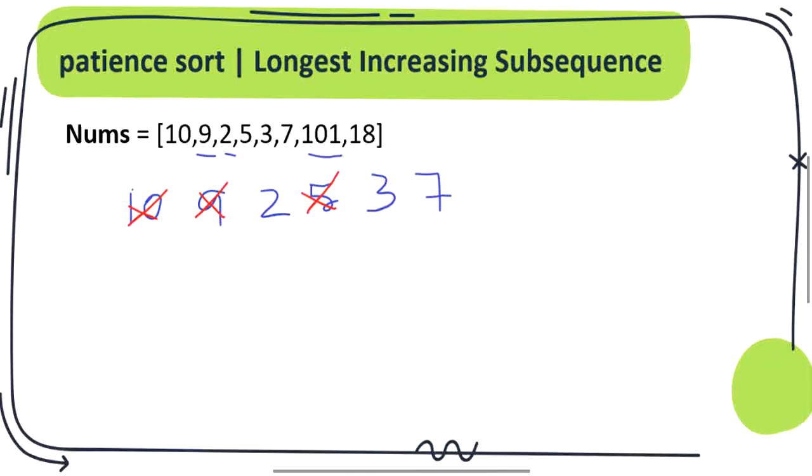Moving on to 101. Ceiling of 101 is going to return null, so simply add that to our set. Finally the number is 18. 18 ceiling is going to return 101 because that is the nearest greater number in the set. We are going to remove 101 and add 18 to the set. So finally the elements left in the TreeSet is going to be the longest increasing subsequence and size of the TreeSet is going to give us the length of the longest increasing subsequence in the given array.